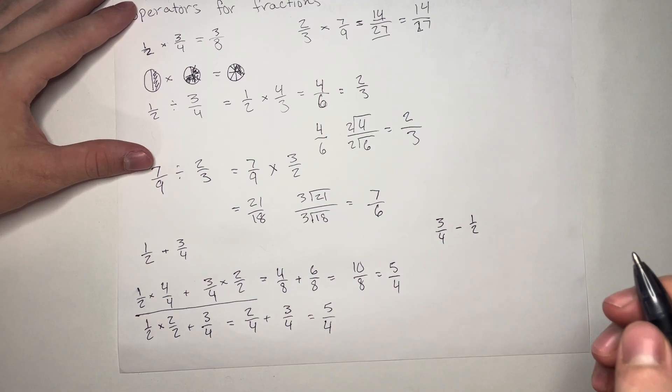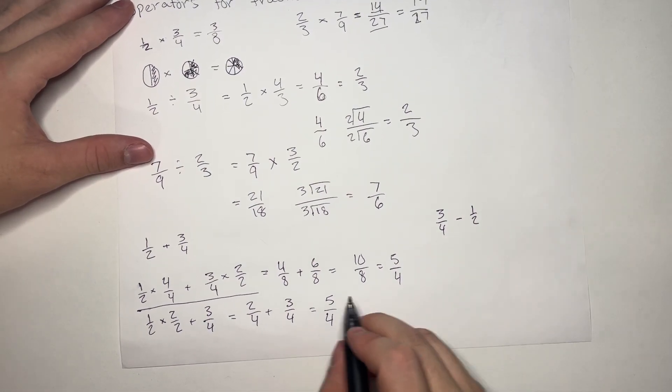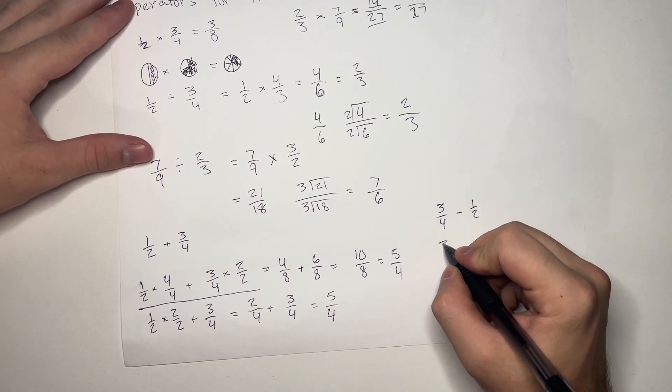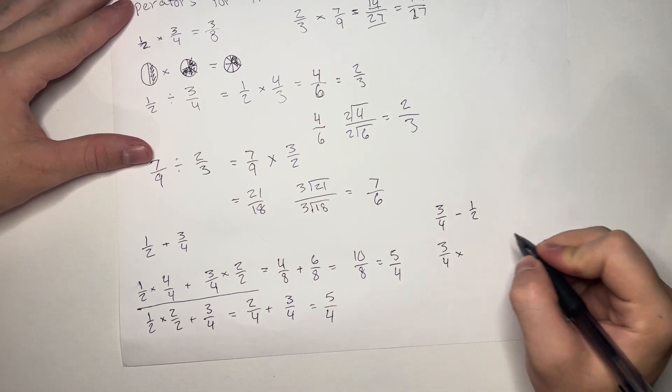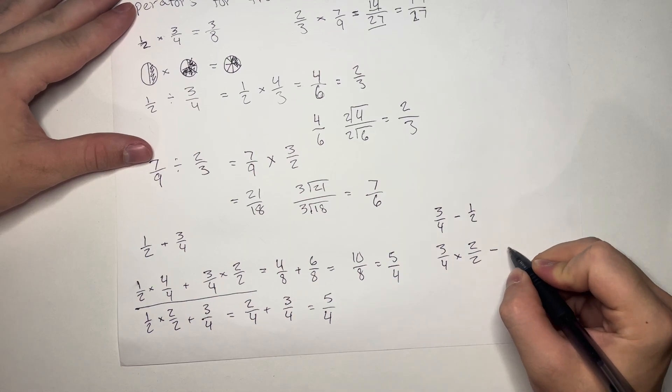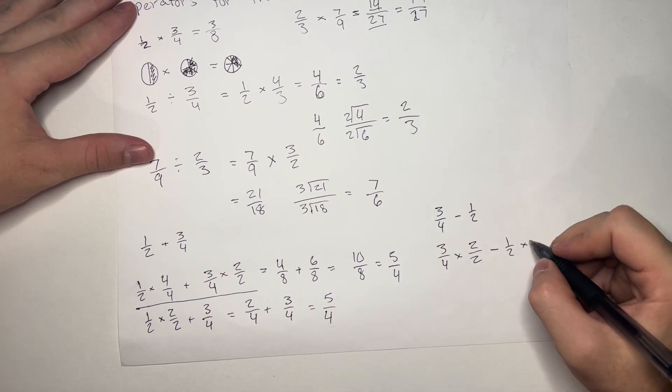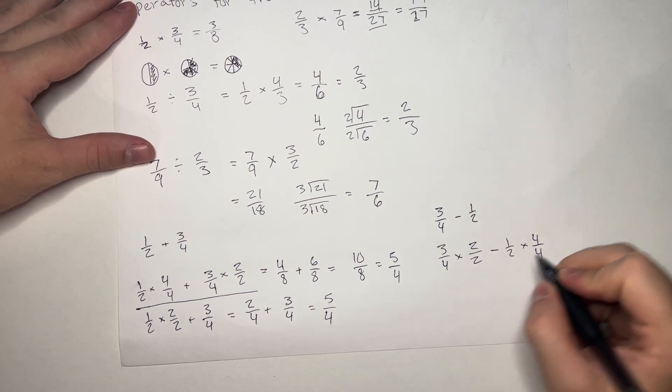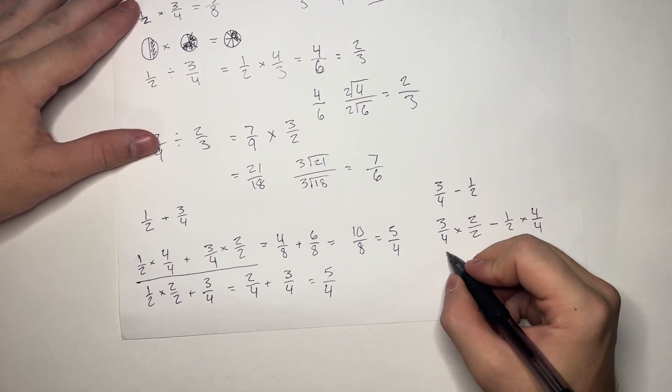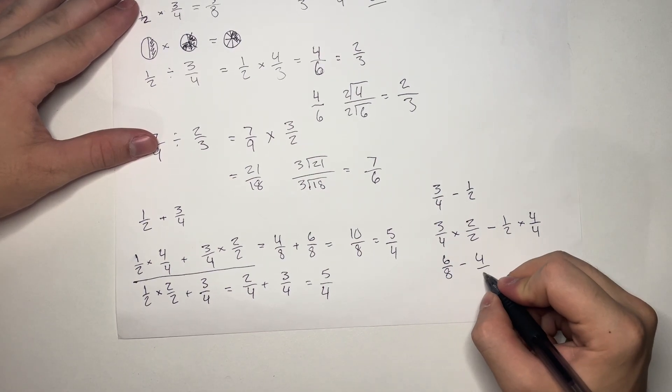And again, we are going to get common denominators. So, we're going to multiply 3 over 4 by 2 over 2 minus 1 half times 4 over 4. And here, we get 6 over 8 minus 4 over 8.